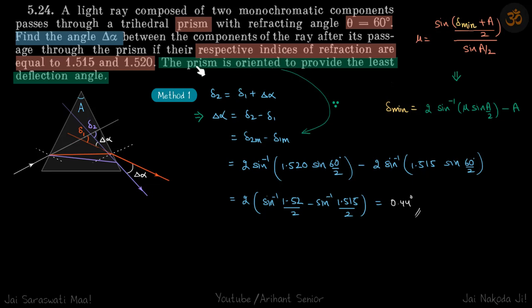Prism is oriented to provide the least deflection angle. So because the mu difference is not much, we can assume that both the rays are getting deflected to the maximum value.